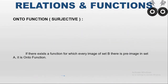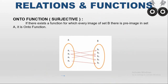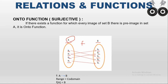Next is an onto function. The other name for the onto function is a surjective function. Consider two sets A and B. A function F is an onto function when every image presented in B has a pre-image in set A. For example, B1 has pre-image A2, B2 has pre-image A3, B3 has pre-image A1, B4 has pre-image A2, and B5 has pre-image A4. This is called an onto function, or we can say the range equals the co-domain.